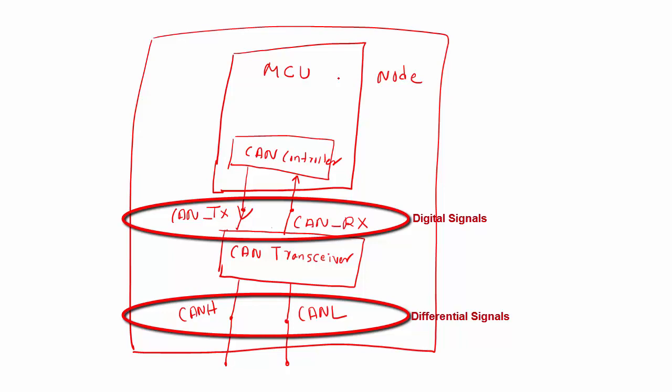We have to convert these single-ended pins to differential signals. And for that purpose, we have to use CAN transceiver. And CAN transceiver gives you two outputs: one is CAN H and another one is CAN L. Those are differential signals and that you have to connect to the bus.